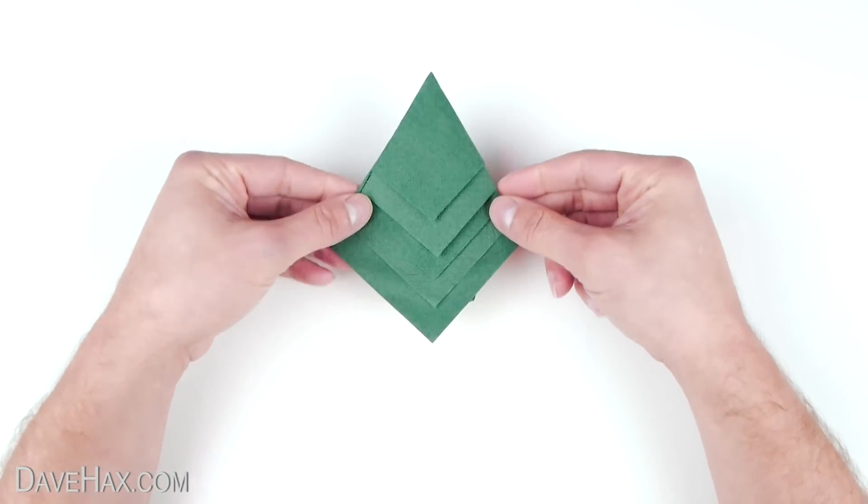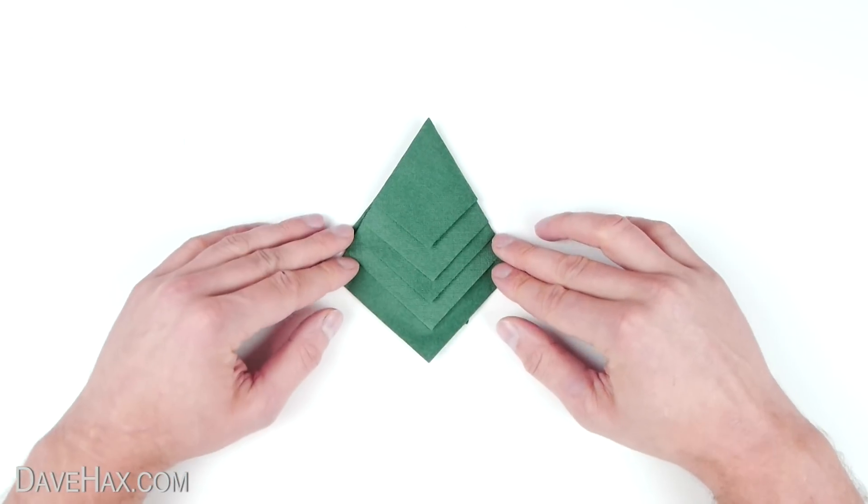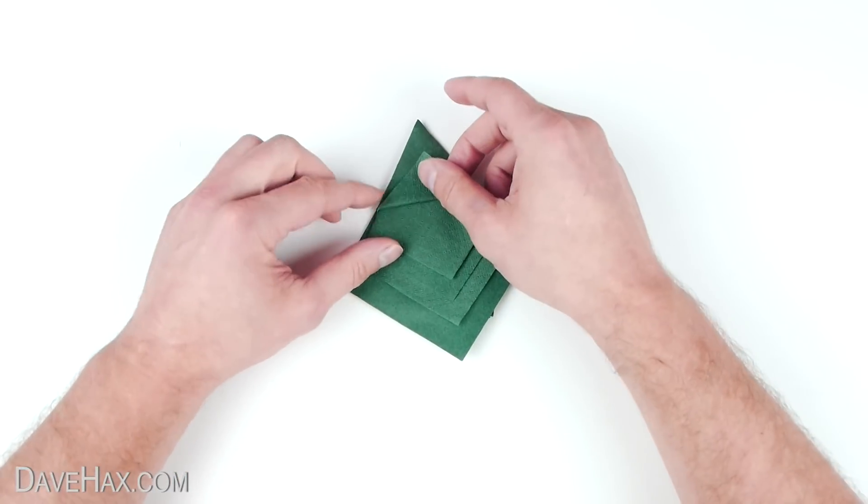Next turn it over again and you should now have something which looks like this. Then we need to take this top leaf and fold it straight up.